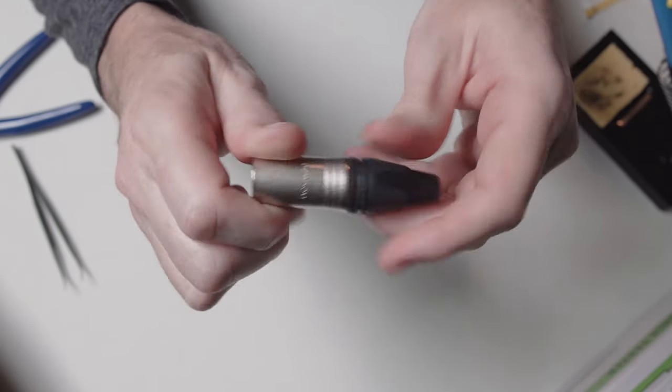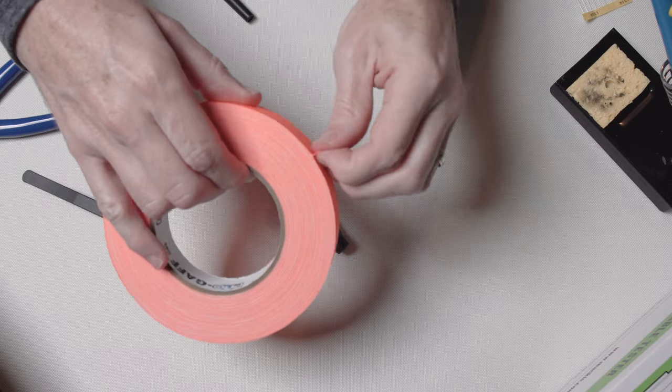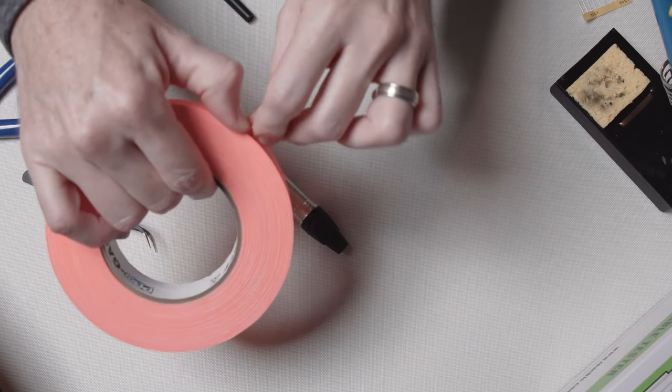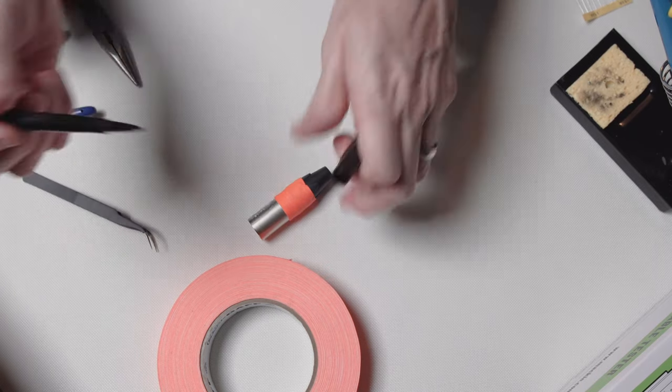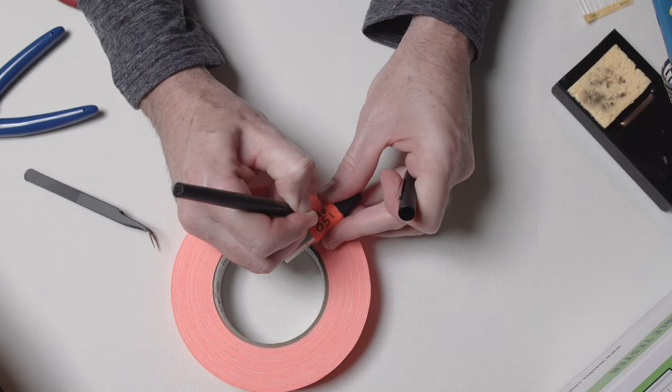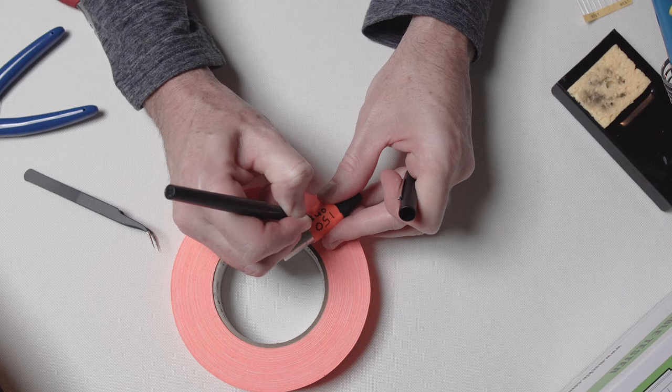I went ahead and labeled mine. It's the only thing in my studio that looks like this, but what the heck? I didn't end up using this gaffer's tape. It didn't stick, but you get the point. 150-ohm. I easily know what this is when I grab it. 150-ohm resistor. Done.